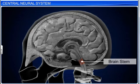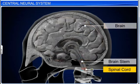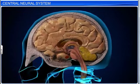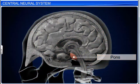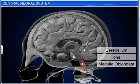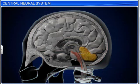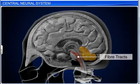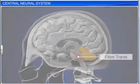The hindbrain is formed of the pons, cerebellum, and medulla oblongata. The pons consists of fiber tracks that interconnect the cerebral cortex and medulla to the cerebellum of the brain. The convoluted surface of the cerebellum provides a lot of space to accommodate the maximum number of neurons.